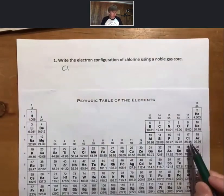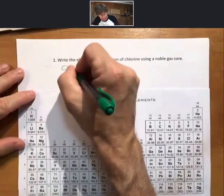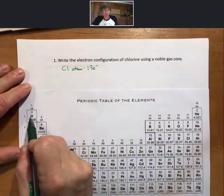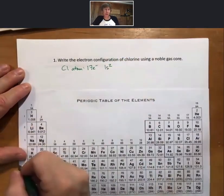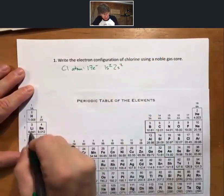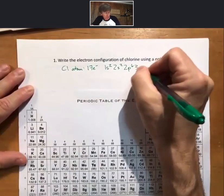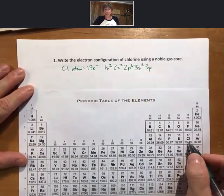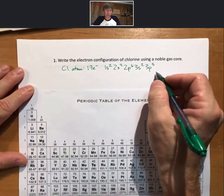On our periodic table, chlorine is element 17, so for a chlorine atom that means you're going to have 17 electrons. Starting at the beginning of the periodic table: 1s2, 2s2, 2p6, 3s2, 3p5 — because that's as many electrons as it takes to fill up chlorine. And so this is without a noble gas core, no abbreviations.